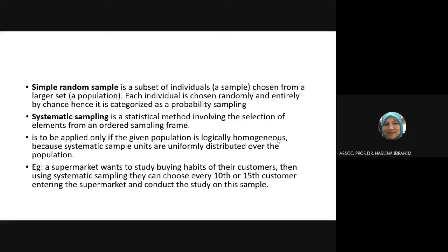To give an example of simple random sampling: it's chosen from a larger set of population — each individual is chosen randomly and by chance. Like said earlier, if you go to an apartment and knock on doors, whoever answers is your sample. Systematic sampling is a statistical method involving the selection of elements from an ordered sampling frame.